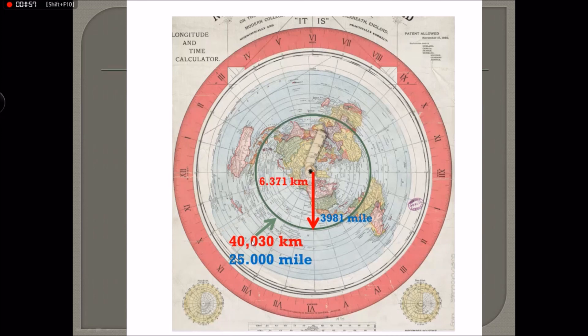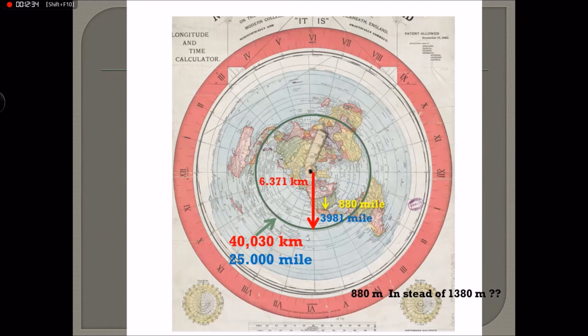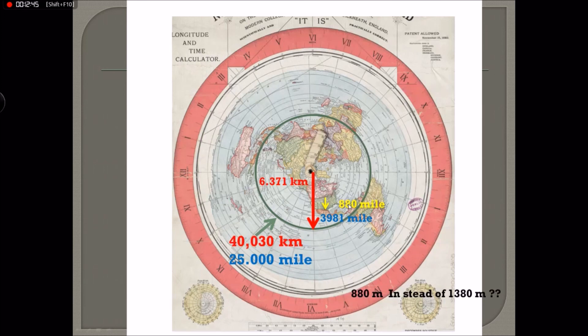Well, in miles, the circumference of the equator is 25,000 miles, that means the radius is 3,981 miles. And that basically makes America, the United States from the Canadian border to the Mexican border, only 880 miles. And we know that is not correct. It must be at least 1,300, almost 1,400 miles. So yes, if that is the case, if this radius is 3,081 miles, then you can already see it's like less than a quarter. So that must be 880 miles and therefore this bridge is only 14 miles and not 22 miles.